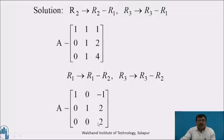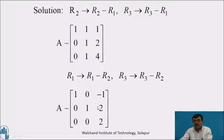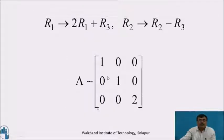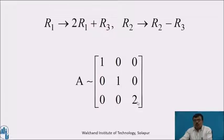Using the third element of the third row, make the third element of the first row and the third element of the second row become 0. The matrix becomes the diagonal matrix [1, 0, 0; 0, 1, 0; 0, 0, 2].